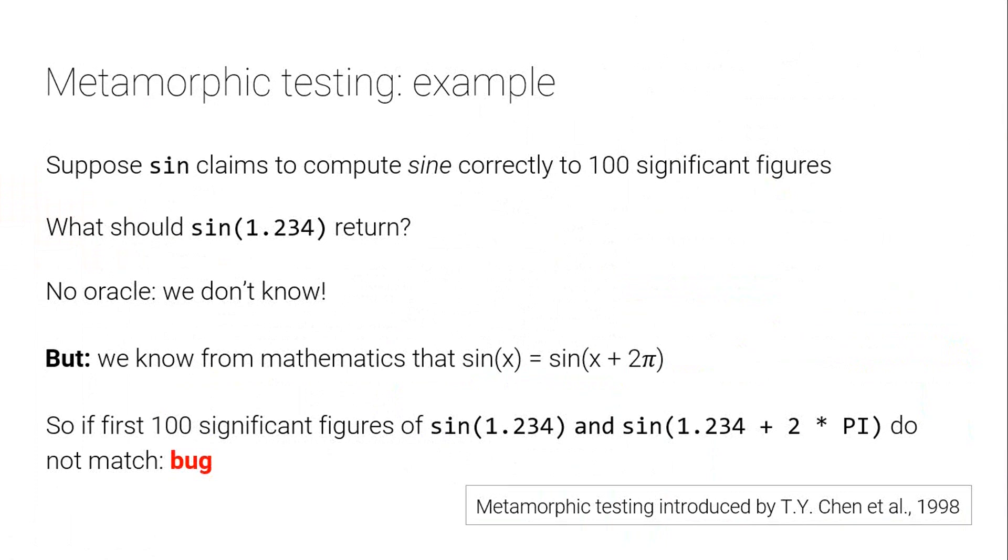Now of course, if we just say that sine always returns zero, that will satisfy this property. So this isn't something that's going to do verification for you. It's not something that you could use to replace any kind of sanity testing. But it's a way of doing intensive follow-up testing. So if you've got an implementation of a function that's working reasonably well, you can randomly test that function with tons and tons and tons of inputs for which you don't know the right answer by sanity checking these properties of the input domain. And that's the essence of metamorphic testing.